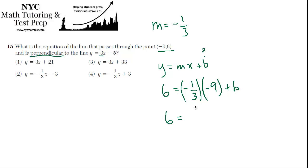6 equals negative 1 third times negative 9 is positive 3 plus b. Subtract 3 from both sides. b must be 3.